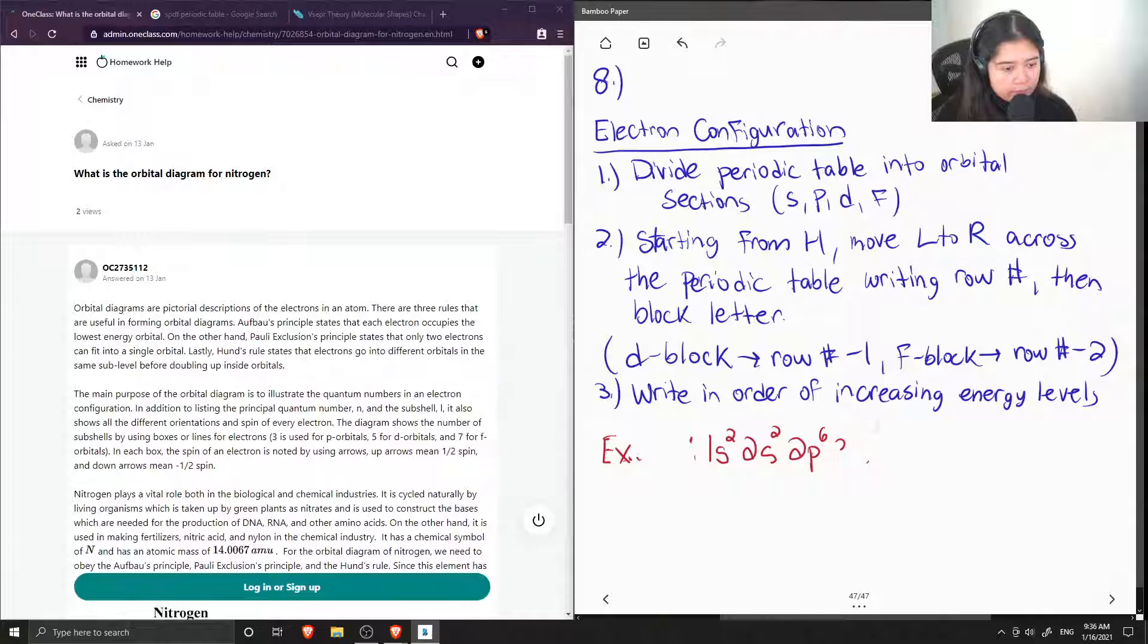And to answer this question, we first need to find the electron configuration of nitrogen in order to write its orbital diagram. Okay, so to find the electron configuration, we first need to divide the periodic table into orbital sections S, P, D, and F. And then starting from hydrogen, we move left to right across the periodic table writing the row number and then the block letter.